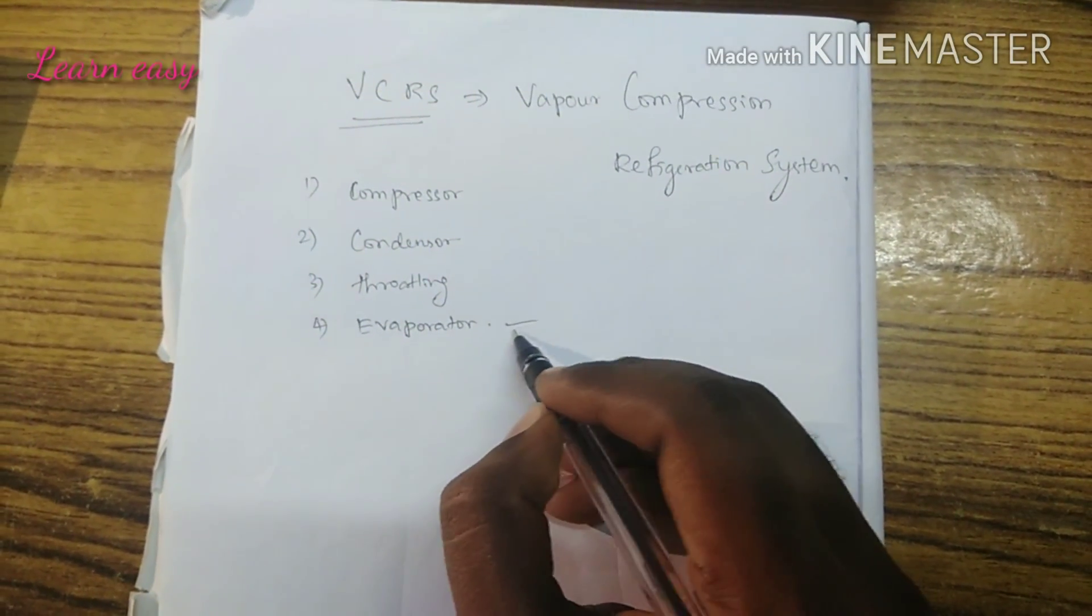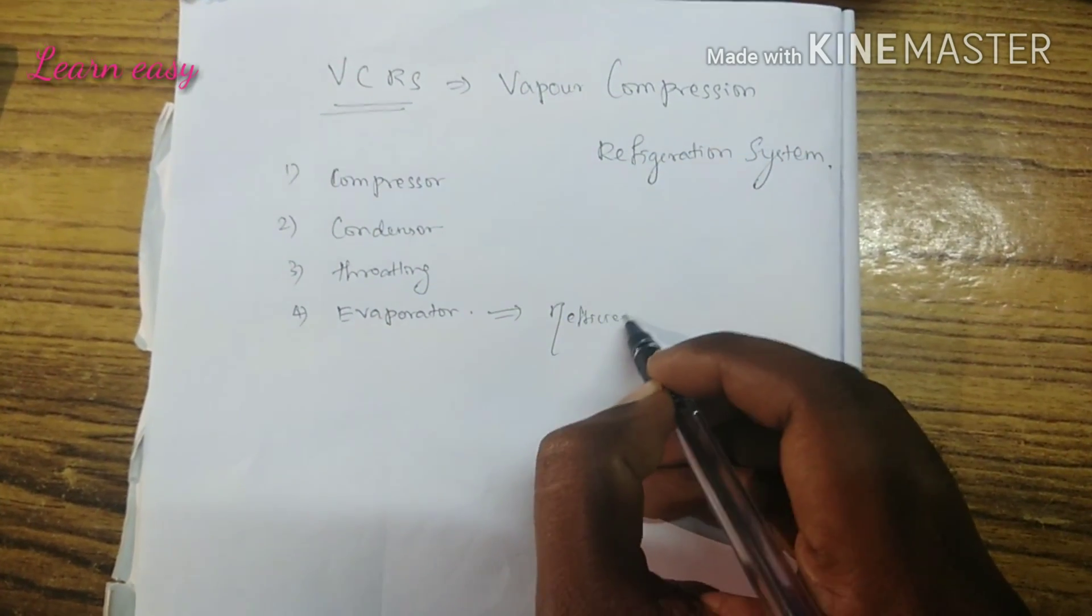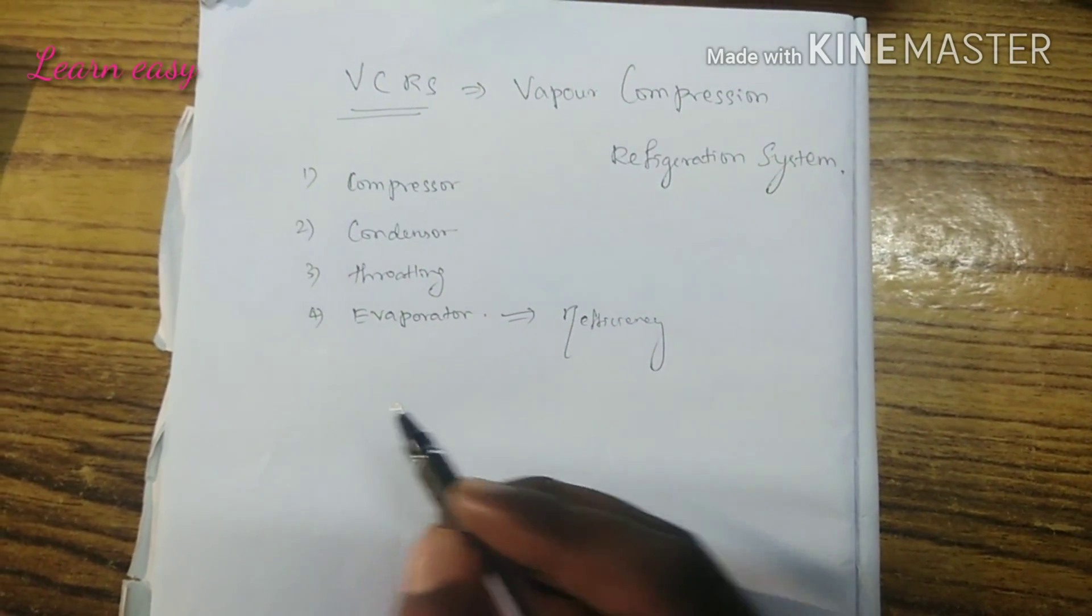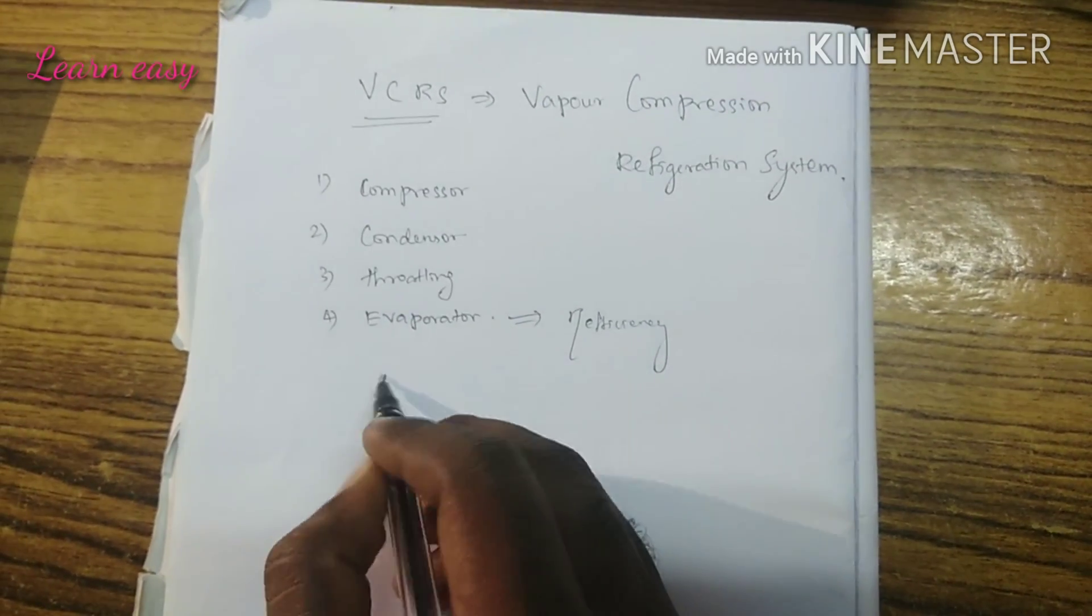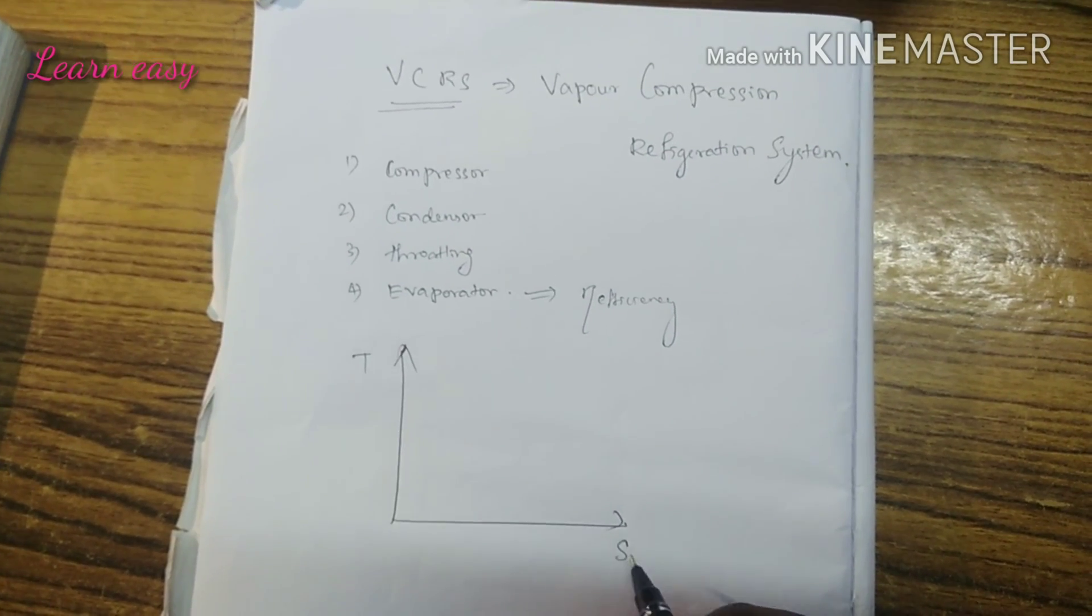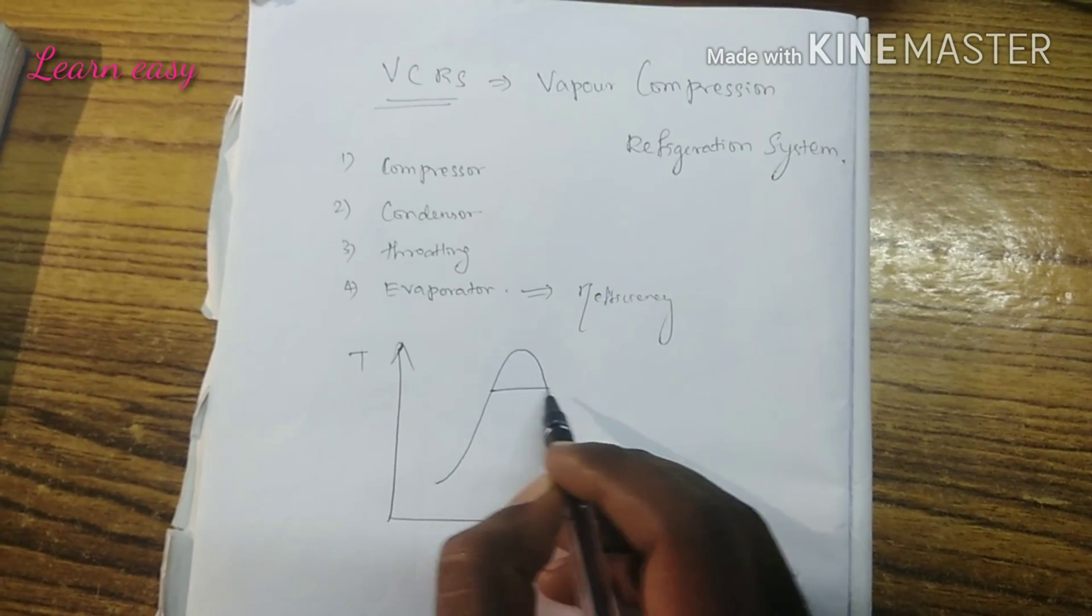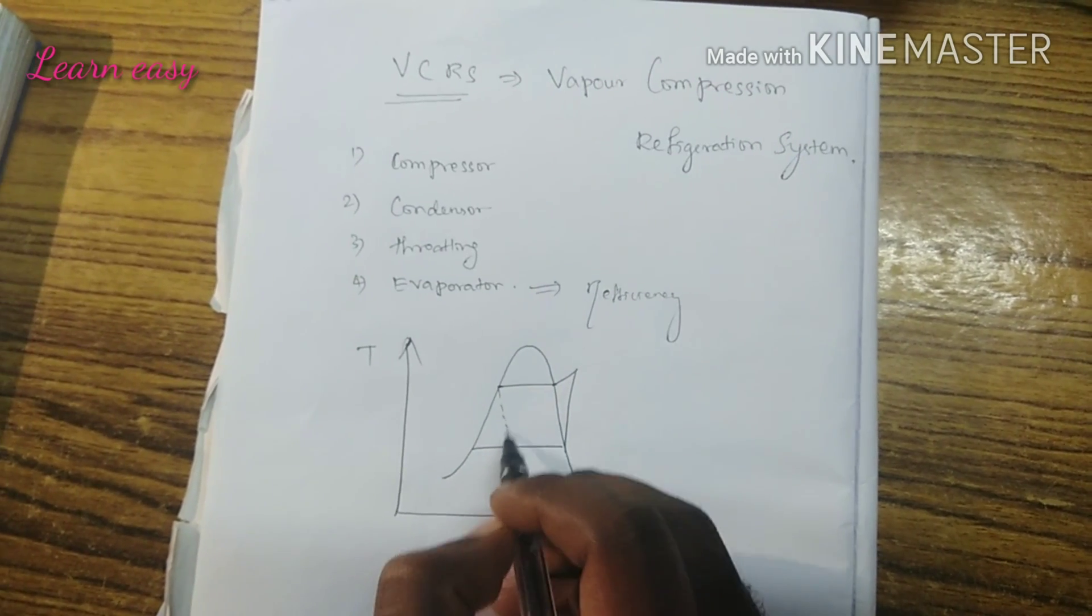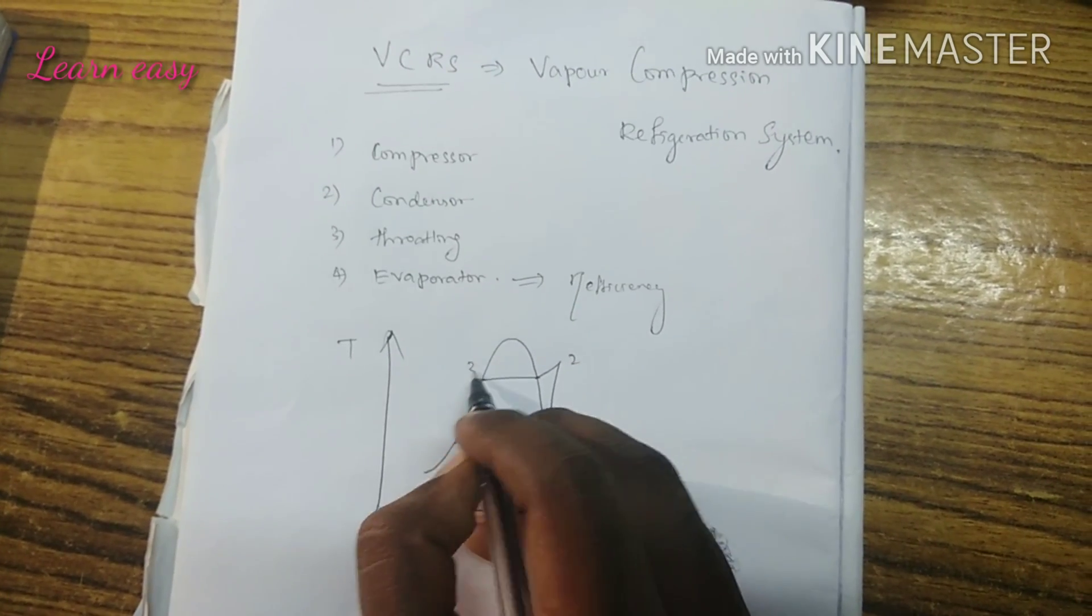The evaporator provides efficiency. Let me show you the basic cycle that explains the Vapor Compression Refrigeration System. This is a graph of temperature versus entropy, the enthalpy diagram. We are going to number the points: 1, 2, 3, 4.